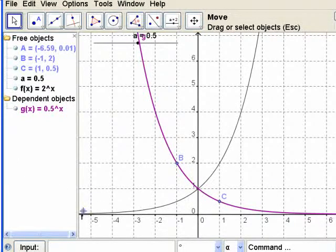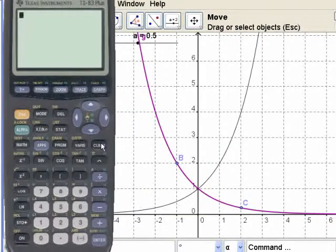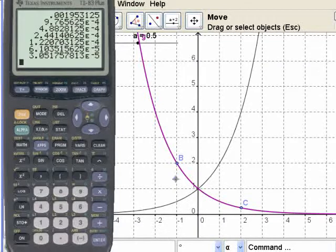0.5 to the 1 is 0.5. 0.5 to the 2 is 0.25. When you raise a number smaller than 1 to a bigger and bigger power, if you take a number smaller than 1 and repeatedly multiply by itself, it's going to keep getting smaller and smaller. Right? So it's going down as you go here.